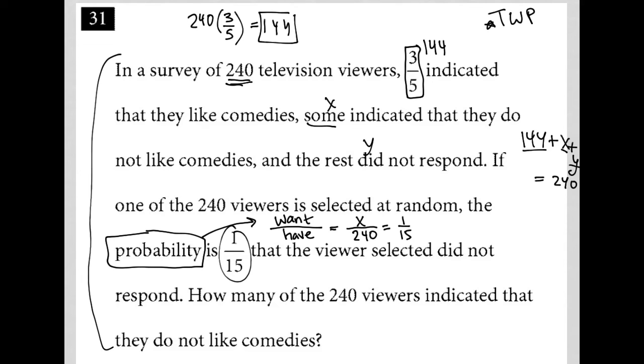And then again, I'm using X, but is X correct? The viewer selected did not respond. Oh, Y, right? So I said Y was the non-responders, so let's just keep that consistent. So there's no confusion. So really, this is Y over 240 equals 1 over 15.